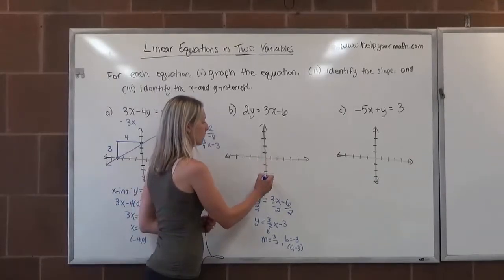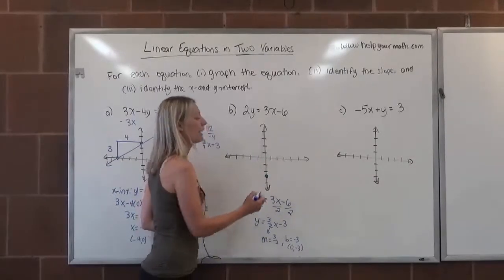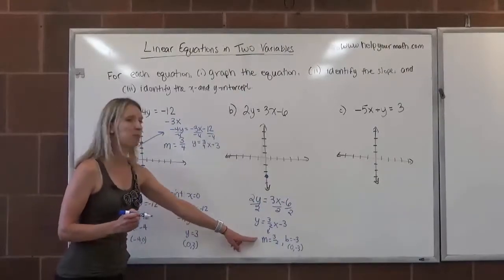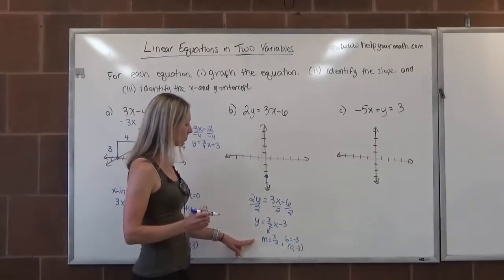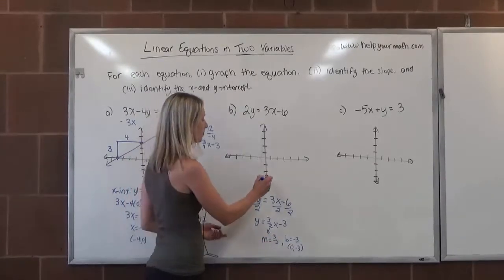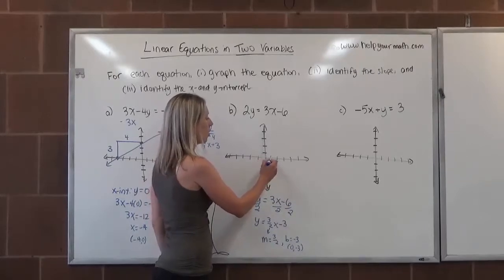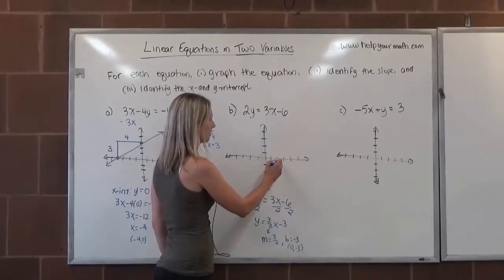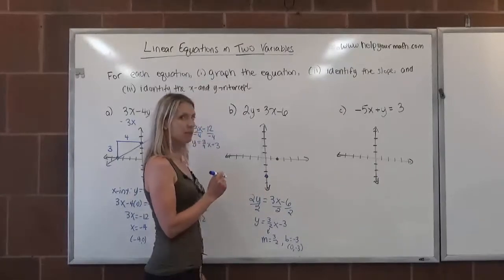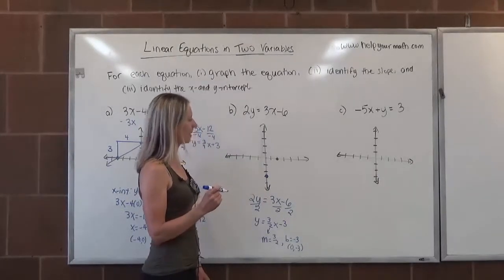I can use those two pieces of information to help me sketch a graph of the line. 0, negative 3, start at the origin, go down 3. There's the point that is the y-intercept. From that point, we use the slope to find another point. The slope says we're going to rise 3 and run 2. That's going up 1, 2, 3 over 2. Hey! Cool! Looks like we might have just found the x-intercept. That was convenient.